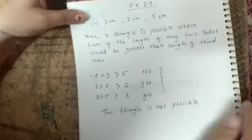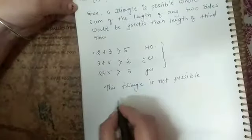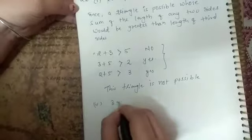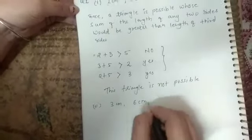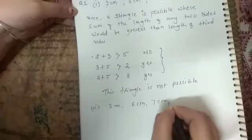Now see the next question. The next question is the sides are 3 cm, 6 cm, 7 cm.